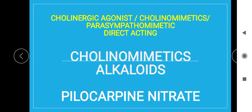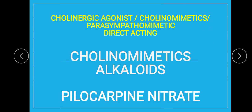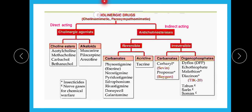The classification: the drug we are going to talk about is pilocarpine nitrate. The classification of cholinergic or cholinomimetic or parasympathomimetic drugs — I have already uploaded a video with a trick to remember this classification. Amongst these, pilocarpine is a cholinomimetic alkaloid and it belongs to the class of direct acting drugs.